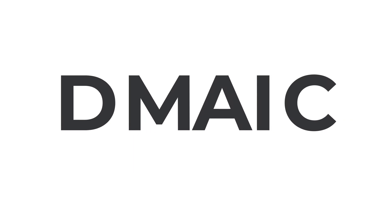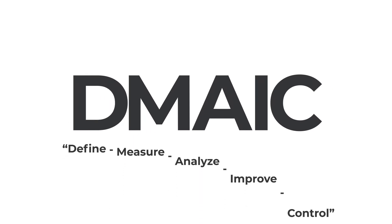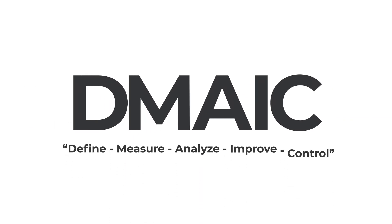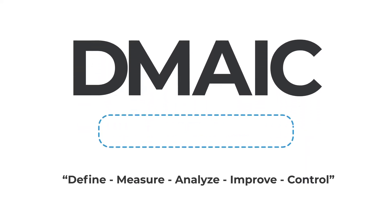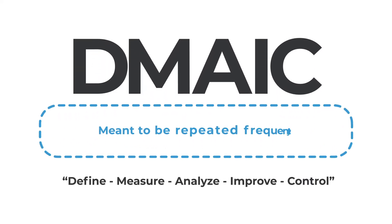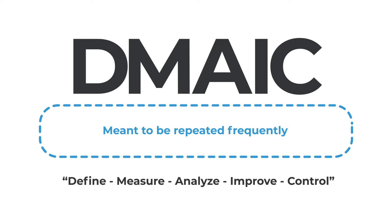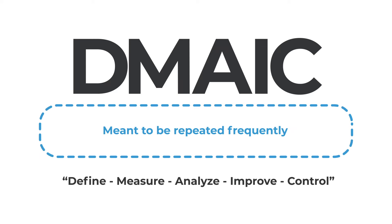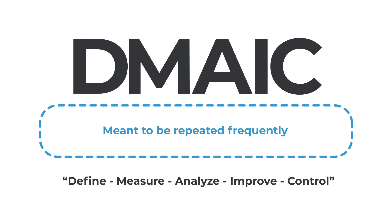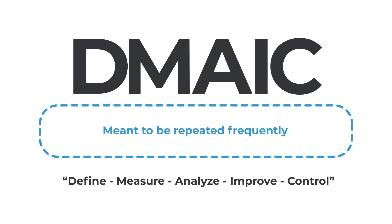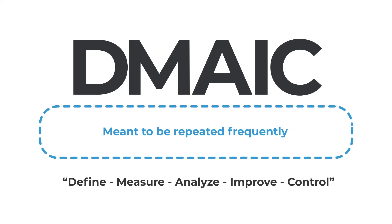DMAIC stands for Define, Measure, Analyze, Improve, and Control. The five steps represent an improvement cycle that's meant to be repeated frequently in an effort to identify best practices and move even closer to perfect processes.